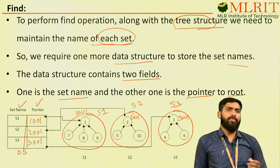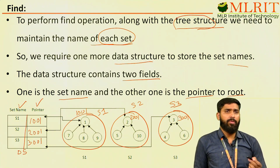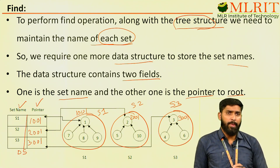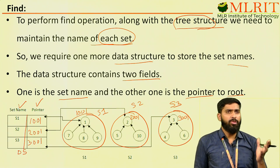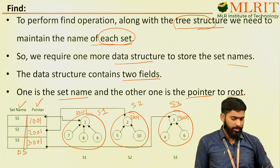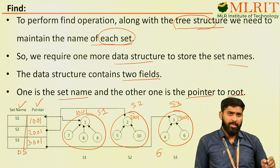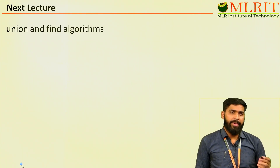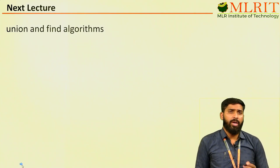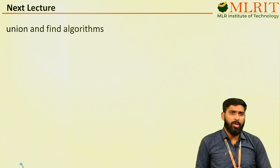Find means you are given one element and you find which set that element belongs to. If I give 6 as input, 6's root is 3, and 3 is in S3, so it returns S3 as output — 3 represents set 3. In the next lecture, we are going to discuss about union and find algorithms. Thank you.